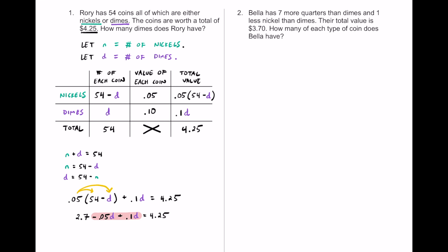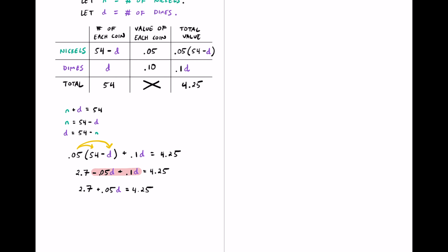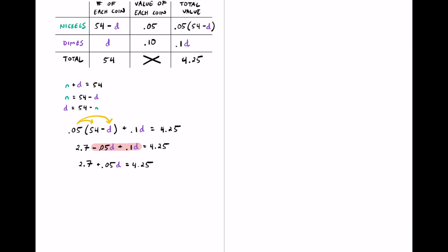Adding negative 0.05d plus 0.1d gives us positive 0.05d. So our new equation is 2.7 plus 0.05d equals 4.25. Now we just have a two-step equation. We use the subtraction property of equality and take away 2.7 from both sides. The 2.7 cancels on the left, leaving 0.05d equal to whatever 4.25 minus 2.7 is.